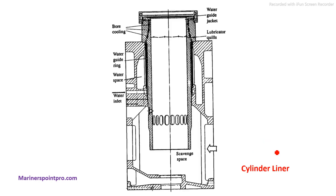Next we have the cylinder liner. In the cylinder liner diagram we can see the bore cooling arrangement, the water guide and water space, and the lubricating quills where cylinder liner lubrication happens. There are also inlet ports visible.